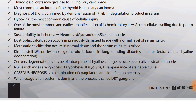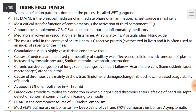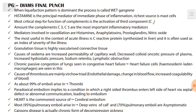Nuclear changes are pyknosis, karyorrhexis, karyolysis, and disappearance of stainable nuclei. Caseous necrosis is a combination of coagulation and liquefaction necrosis. When coagulation pattern is dominant it is called dry gangrene; when liquefaction pattern is dominant it is called wet gangrene.